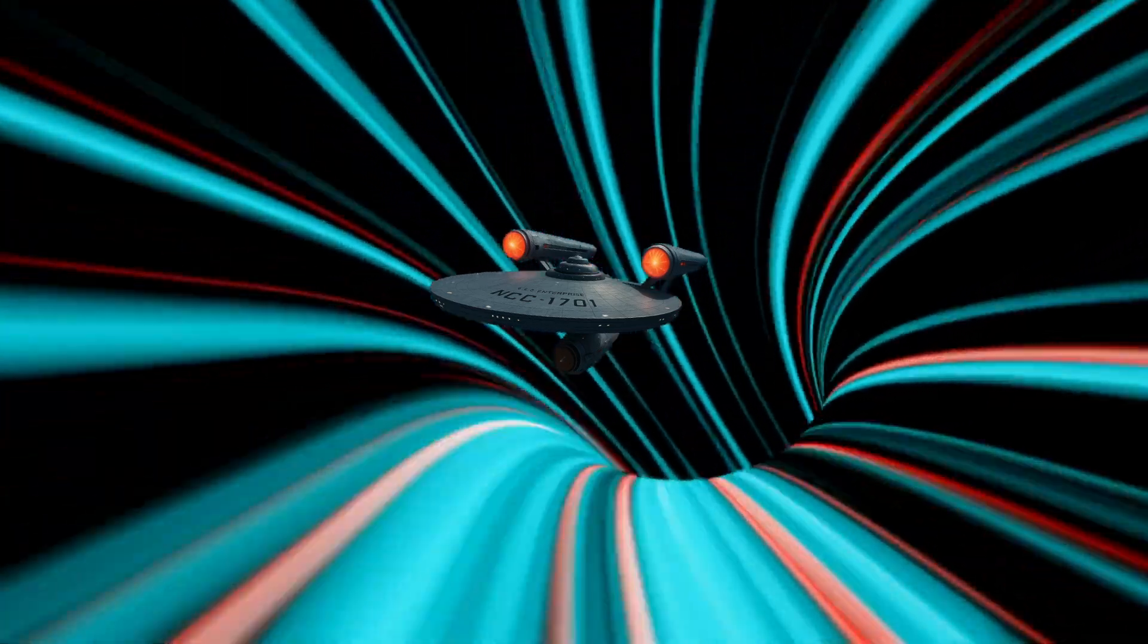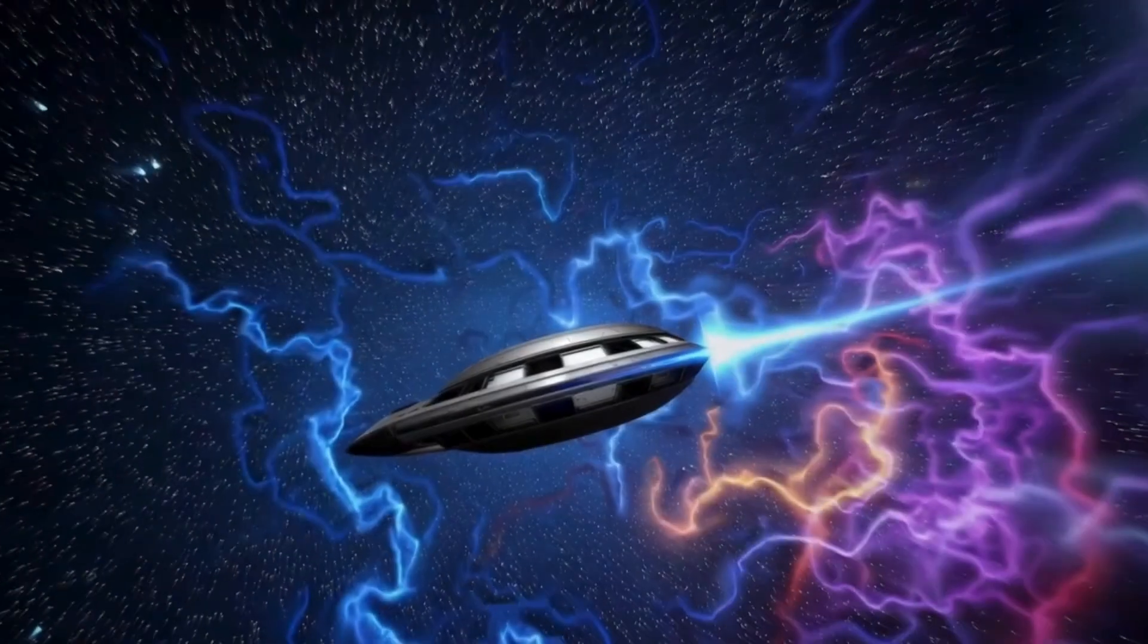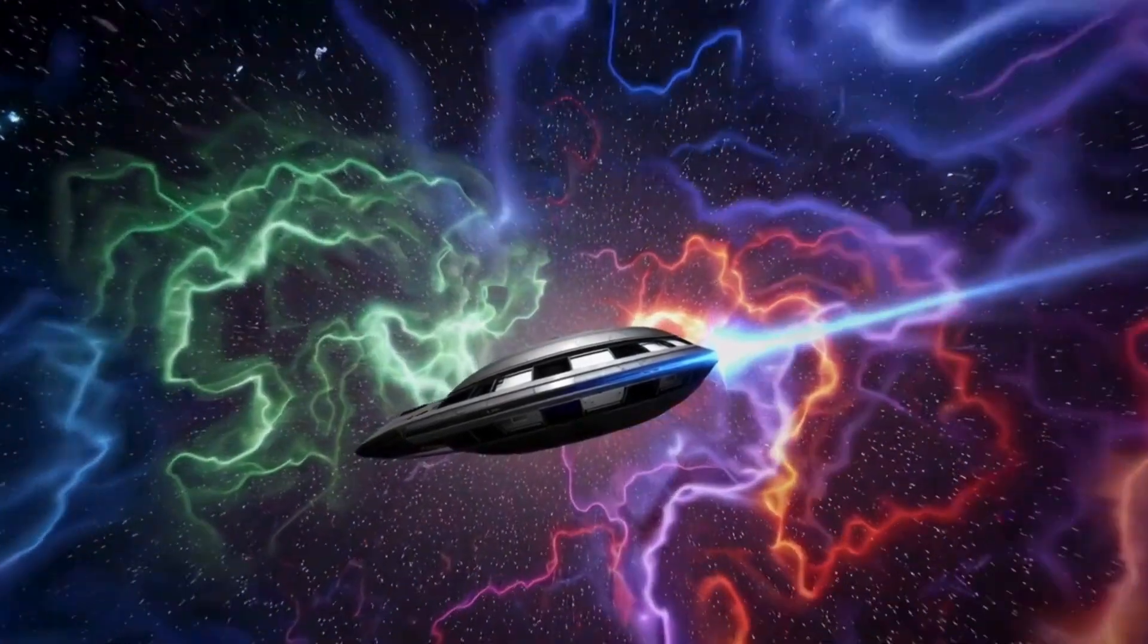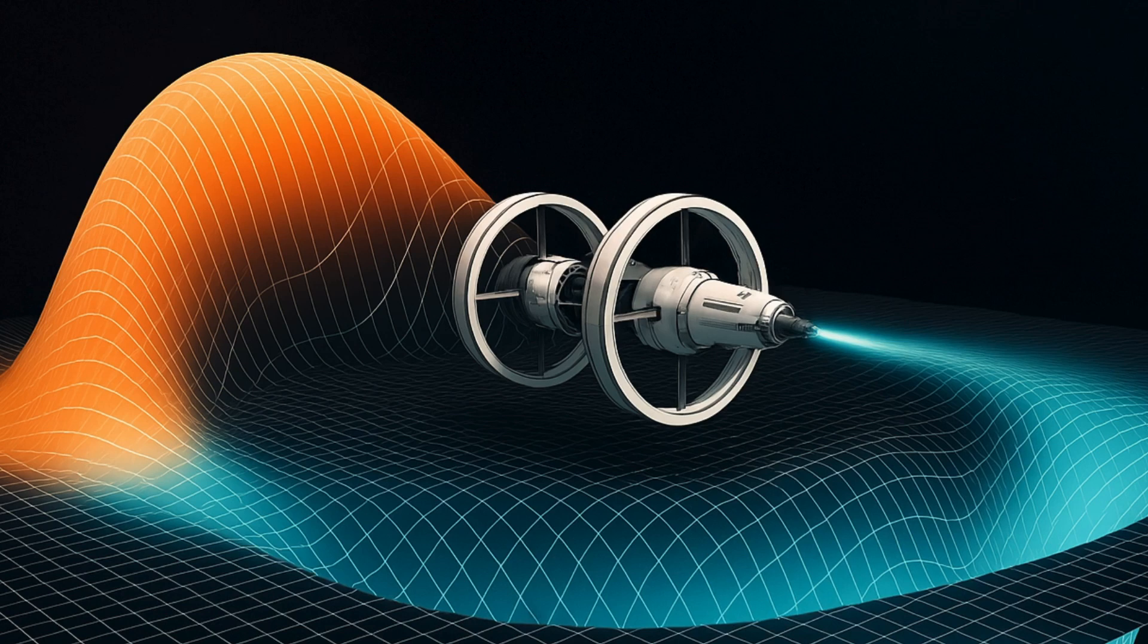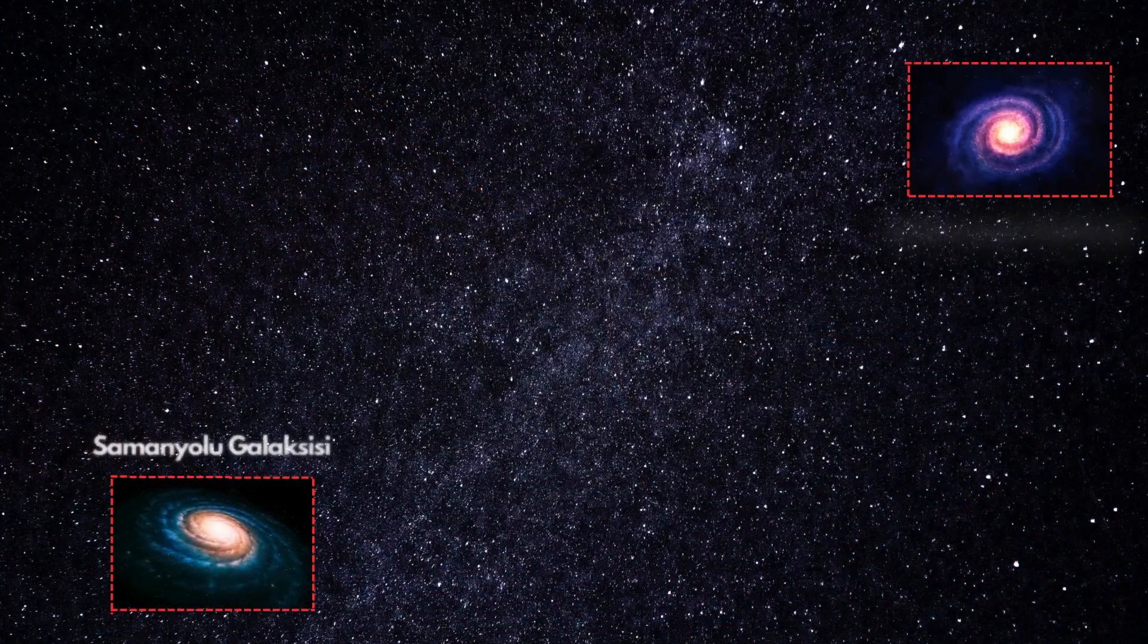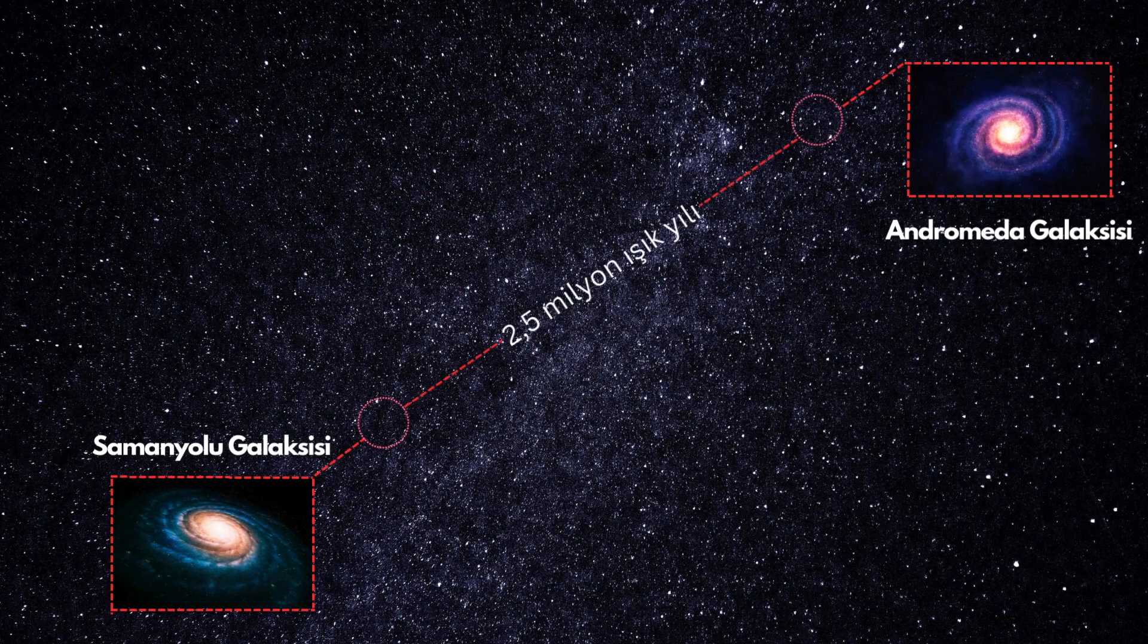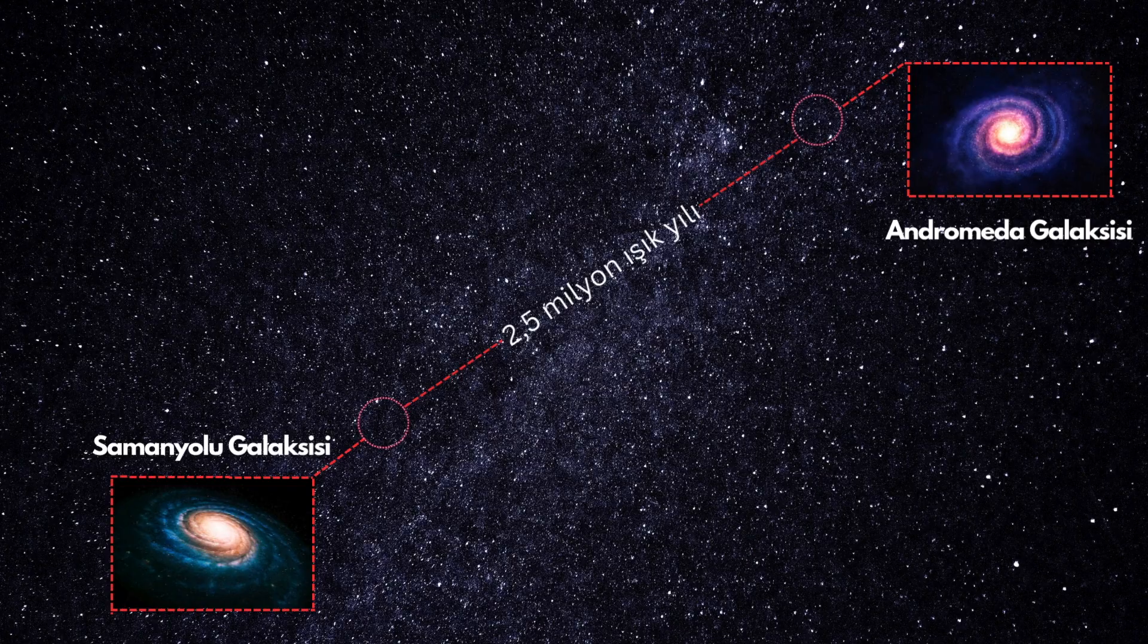Still, the energy problem hasn't gone away. Sure, we don't need negative energy anymore, but the shell required to create the warp bubble has a mass equal to 2.4 times that of Jupiter. That's several septillion kilograms, just for a tiny warp field.